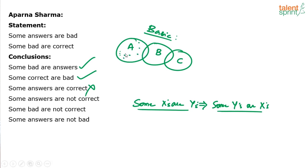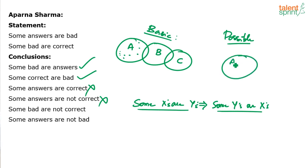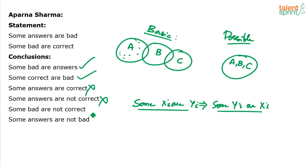You can always choose some of these answers and say these are not correct. But will it always satisfy? My practice of solving syllogism questions tells me that some answers are not correct would be false. Let me draw a possible diagram to prove it false. It says some answers are bad — I can say answers and bad are equal, and some bad are correct — I can say bad and correct are also equal. I can use one circle to represent all answers, bads, and corrects. Now, in this diagram, all the answers are correct, so how can you say some answers are not correct?